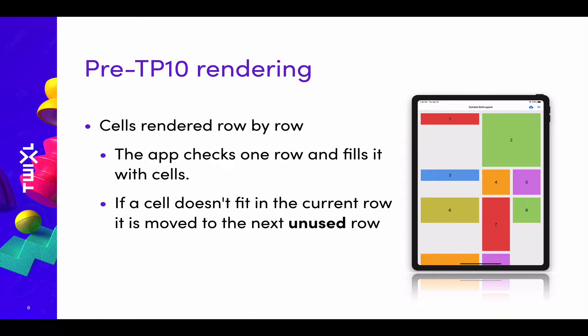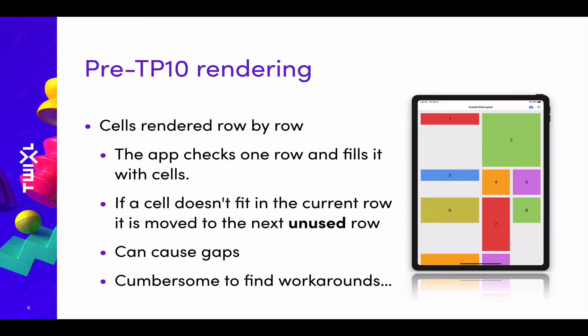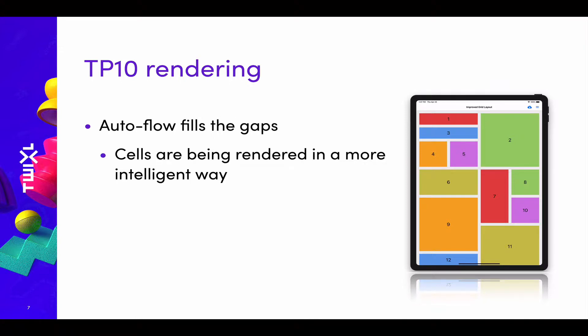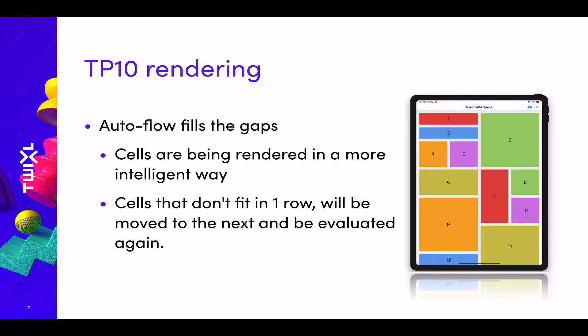If a cell doesn't fit in the current row, it's moved to the next unused row. So if the green content item 2 spans four rows, then the third content item is moved to the fifth row. This could cause gaps, and while there are workarounds, it was sometimes cumbersome. Now with Twixl Publisher 10, content items are rendered in a much more intelligent way. If cells don't fit in one row, they are evaluated again in the next row — not the next unused row — so you won't have these types of gaps anymore.